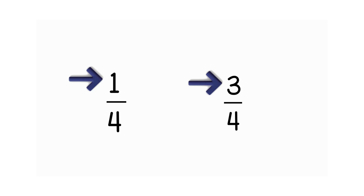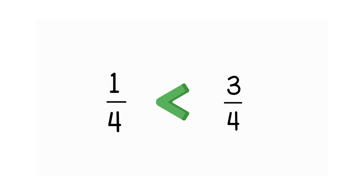When the denominators are the same, we just compare the numerators — the top numbers. Since the denominator is the same, four, we look at the numerators. One is less than three, so one-fourth is less than three-fourths. We can write it with symbols showing one-fourth is less than three-fourths.